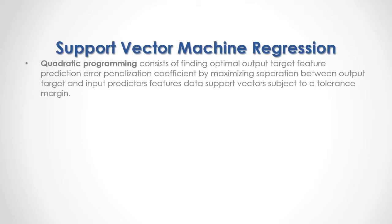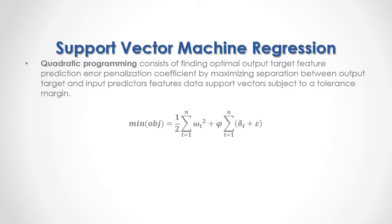Quadratic programming consists of finding the optimal output target feature prediction error penalization coefficient by maximizing separation between output target and input predictor features data support vectors, subject to a tolerance margin. The minimization objective equals one-half multiplied by the sum of the support vector margin width squared, plus a penalization coefficient multiplied by the sum of the output target prediction error or distance out of margins, plus an output target feature prediction error tolerance margin.